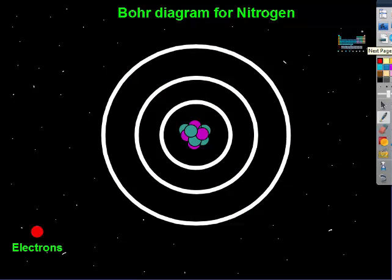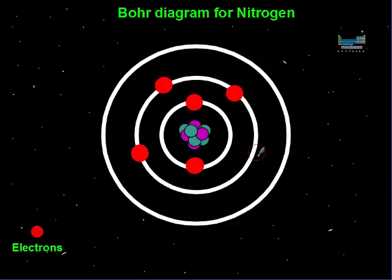I'm going to pause the video and draw the Bohr diagram for nitrogen. Restart when you have your answer. You should have gotten that nitrogen has 7 electrons, so 2 in the first and 5 in the second energy level.